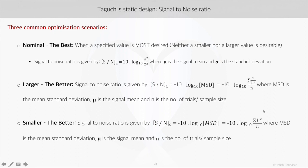So these are the three signal to noise ratios which are used to reduce the variance in a static Taguchi model.